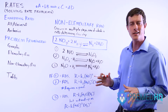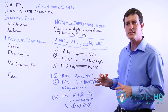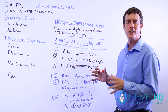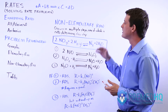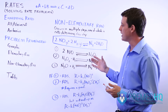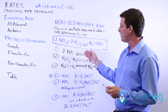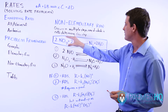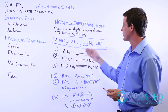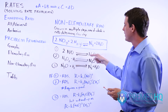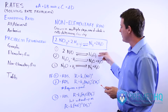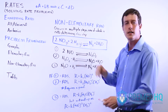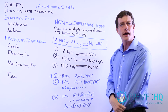Now we move on to non-elementary reactions. A non-elementary reaction is one that doesn't occur in a single step, but rather in a series of steps, and oftentimes involves the formation of intermediates that don't show up in the balanced equation. For example, this first step has N2O2 formed as one of its intermediates, but that's nowhere to be found in the balanced reaction equation.